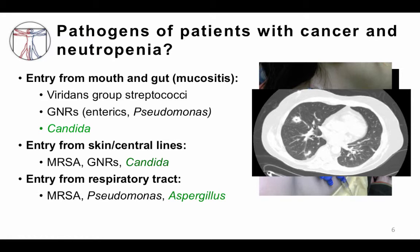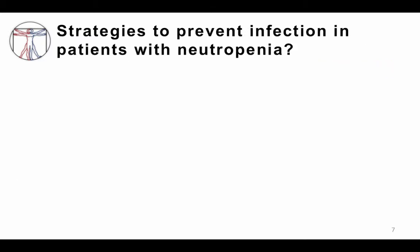You can also get respiratory tract infections with common bacteria that cause hospital-acquired pneumonia, like Staph aureus, MRSA, and Pseudomonas.